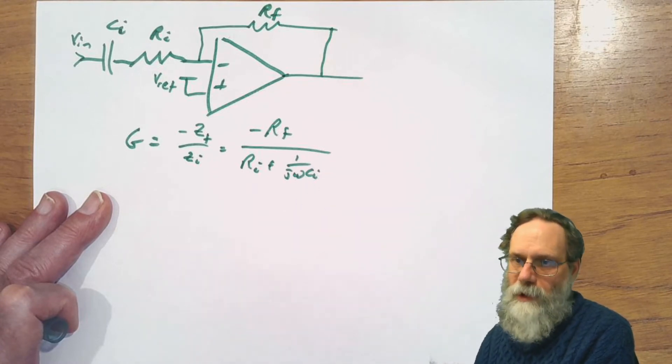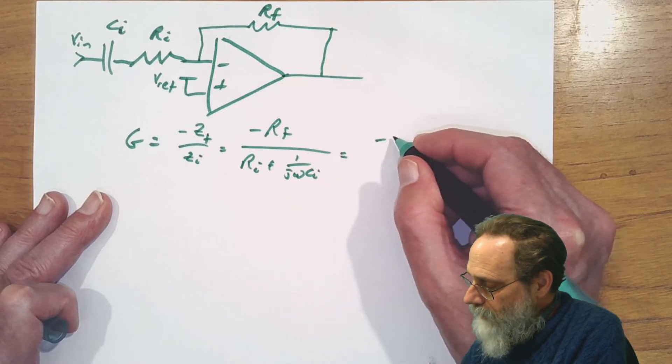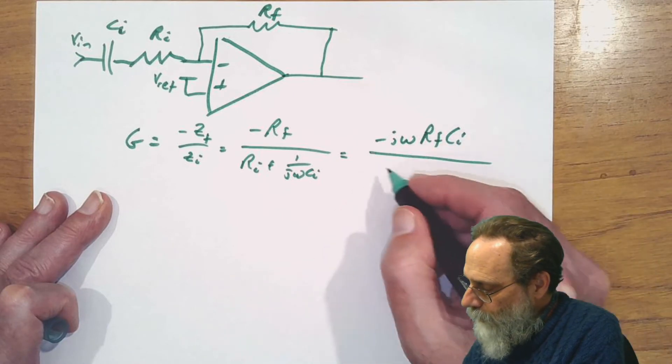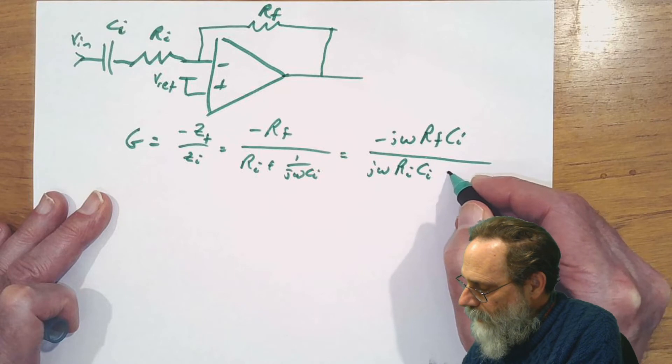Because I don't like the J omega CI on the bottom, we can multiply top and bottom by that and get minus J omega RF CI over J omega RI CI plus one.